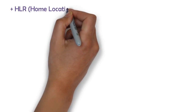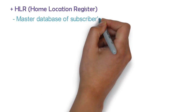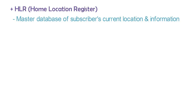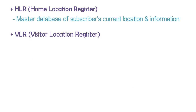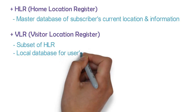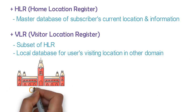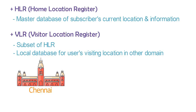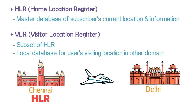The second element is the Home Location Register (HLR) — the central master database of subscribers containing IMSI, current location, and subscriber information. Third is the Visitor Location Register (VLR) — a subset of HLR and a local database of users currently visiting a location in another domain. For example, if a user lives in Chennai, that is his home network and HLR works there. When he travels to Delhi, it becomes his visiting network and VLR starts working.